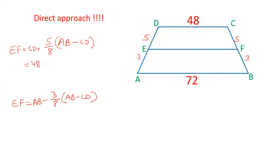CD is given as 48. 5 by 8 into, AB is given as 72 and this is 48. The value will be 48 plus 5 by 8 into the difference of these two, 72 minus 48, 24. 8 threes are 24, 15. The value will be 48 plus 15, that is 63.